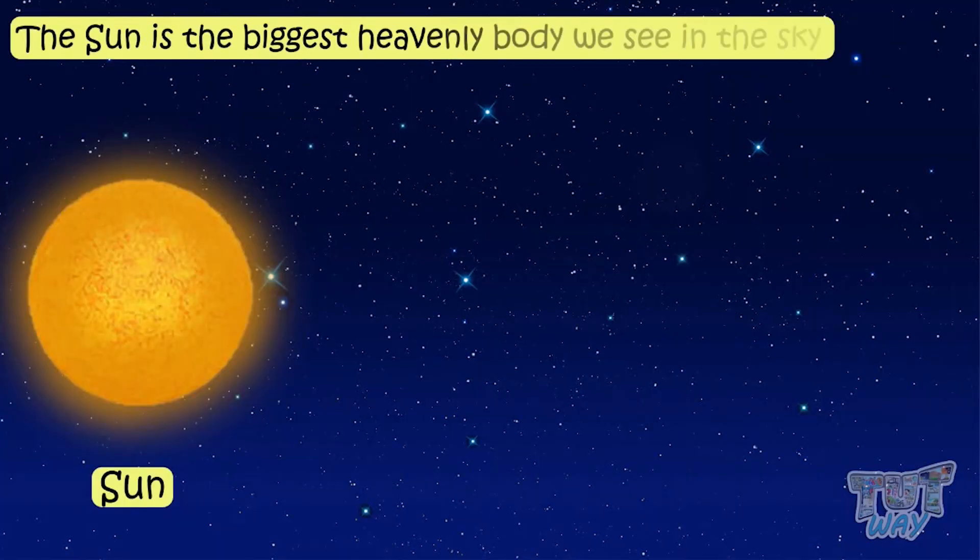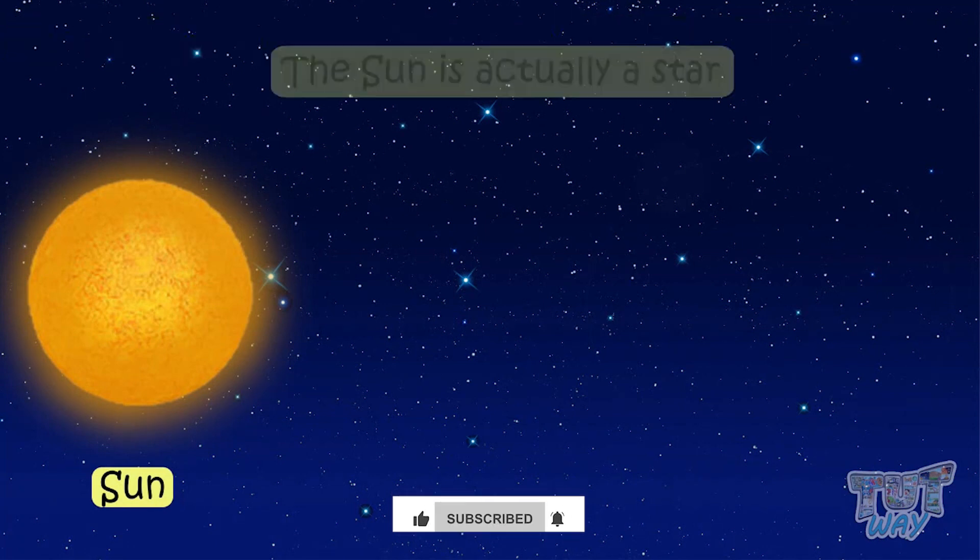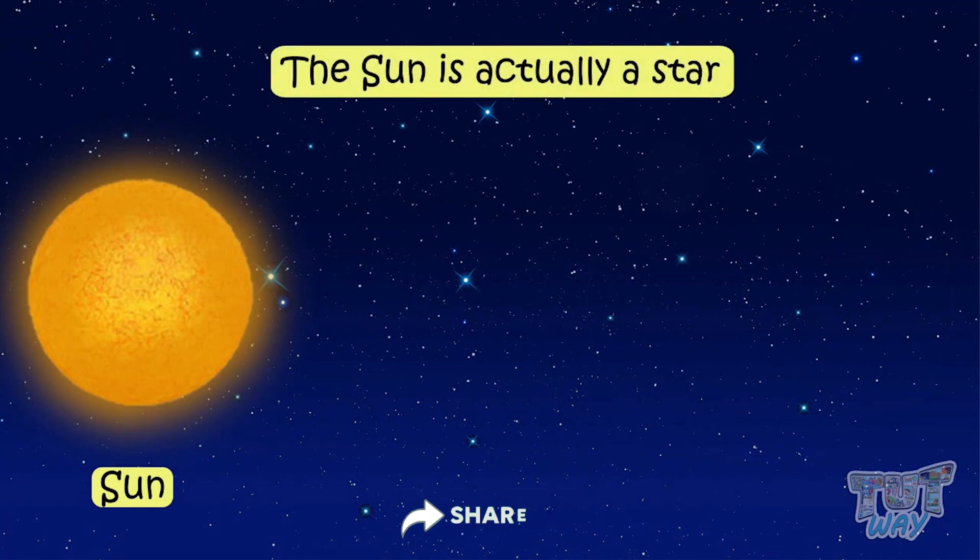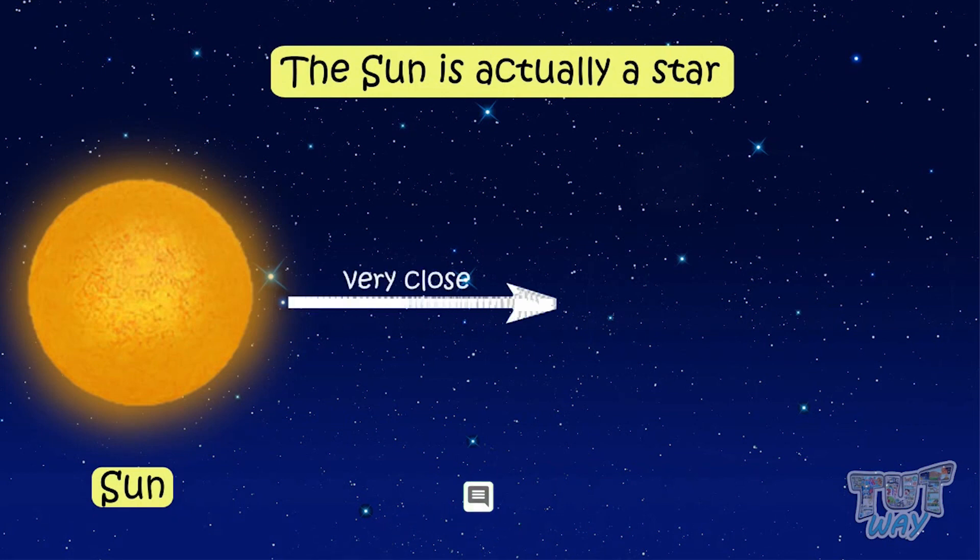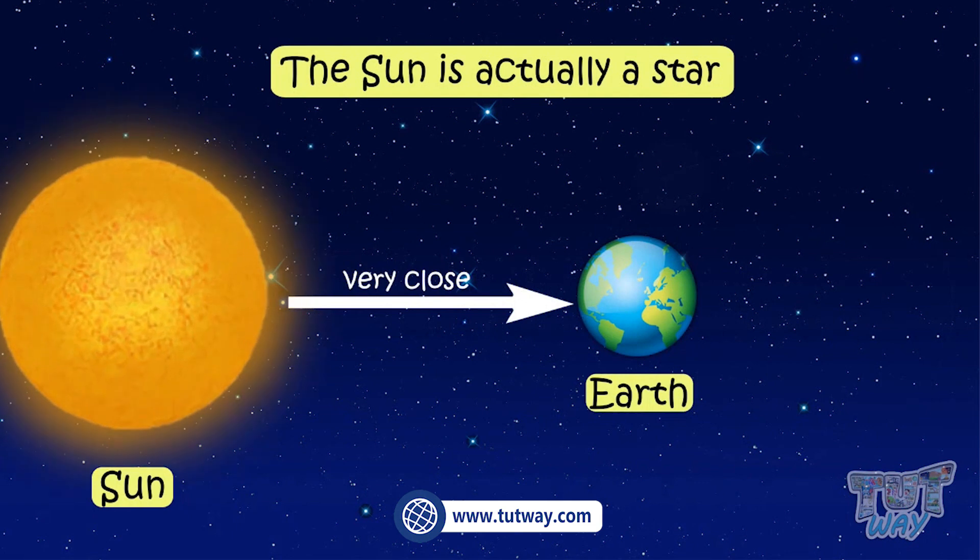The sun is the biggest heavenly body we see in our sky. The sun is actually a star, but it's very close to Earth as compared to stars we see at night. So it seems so much bigger than the stars.